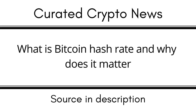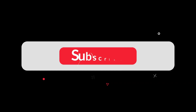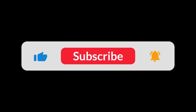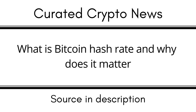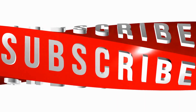What is Bitcoin's hash rate? The amount of processing and computing power being given to the network through mining is referred to as Bitcoin's hash rate. A fixed-length alphanumeric code representing any length of words, messages, or data is called a hash.